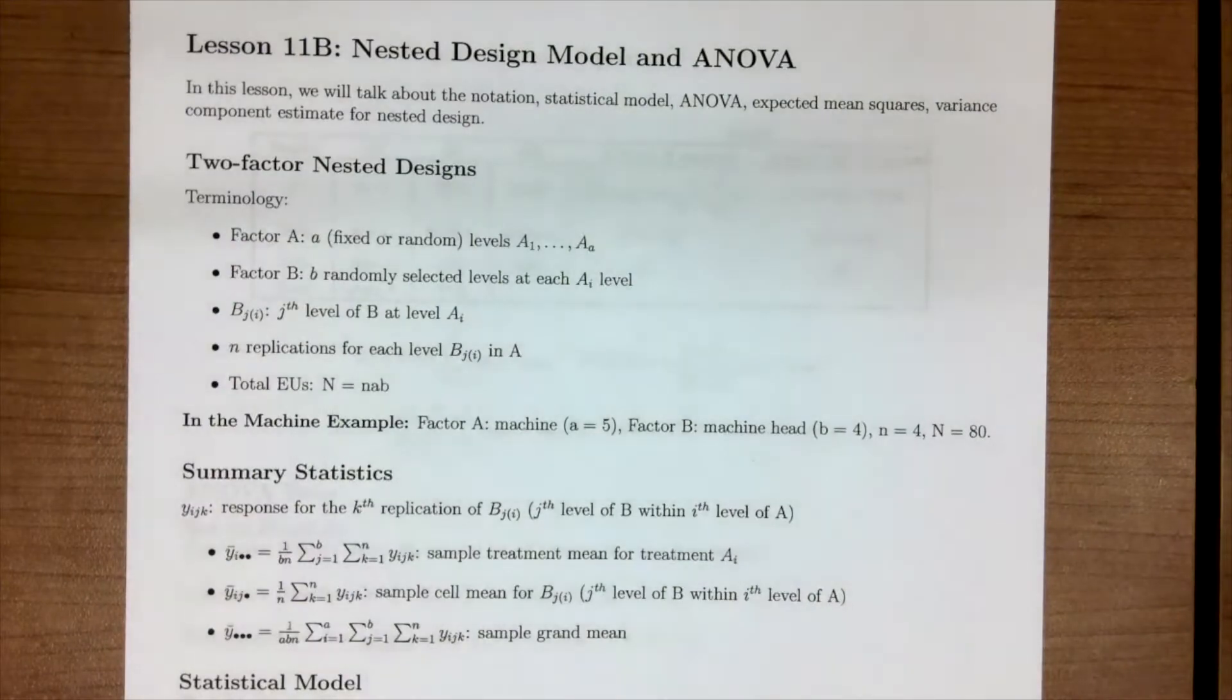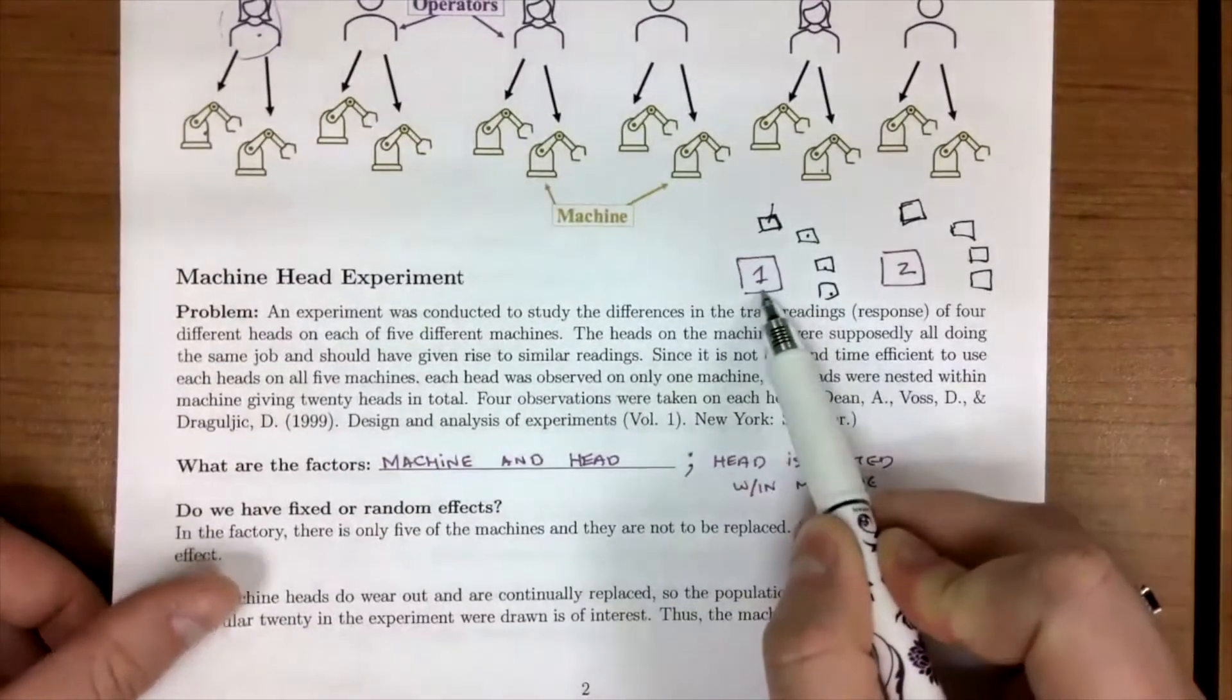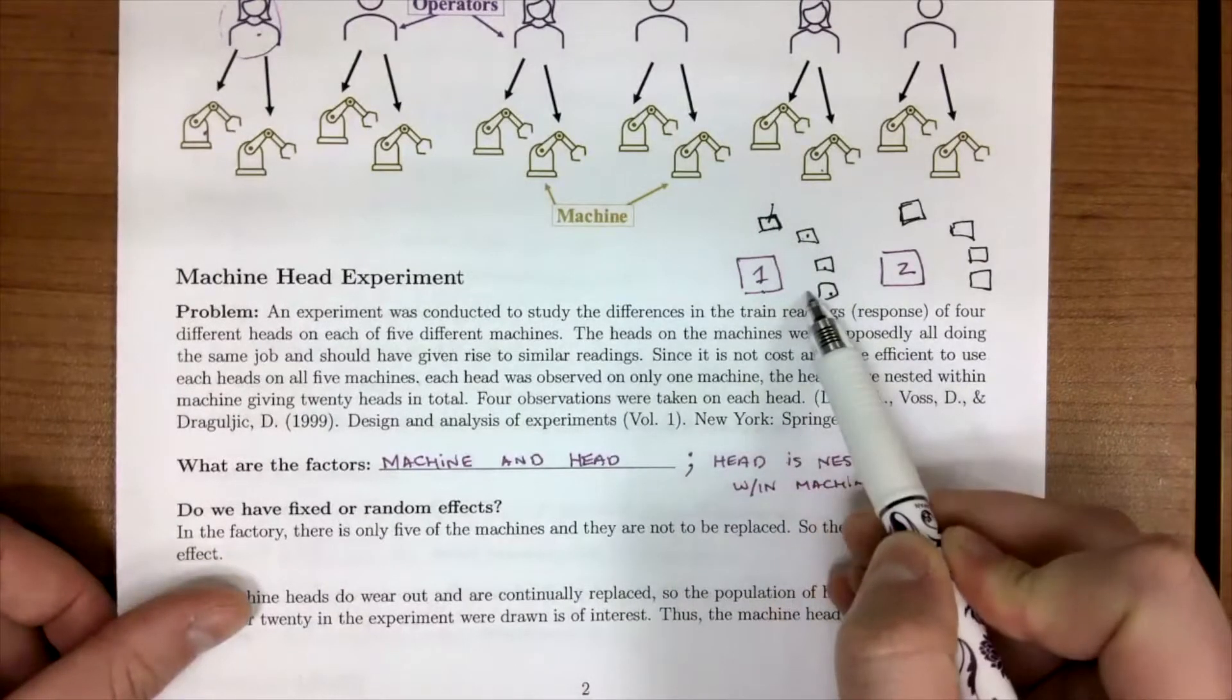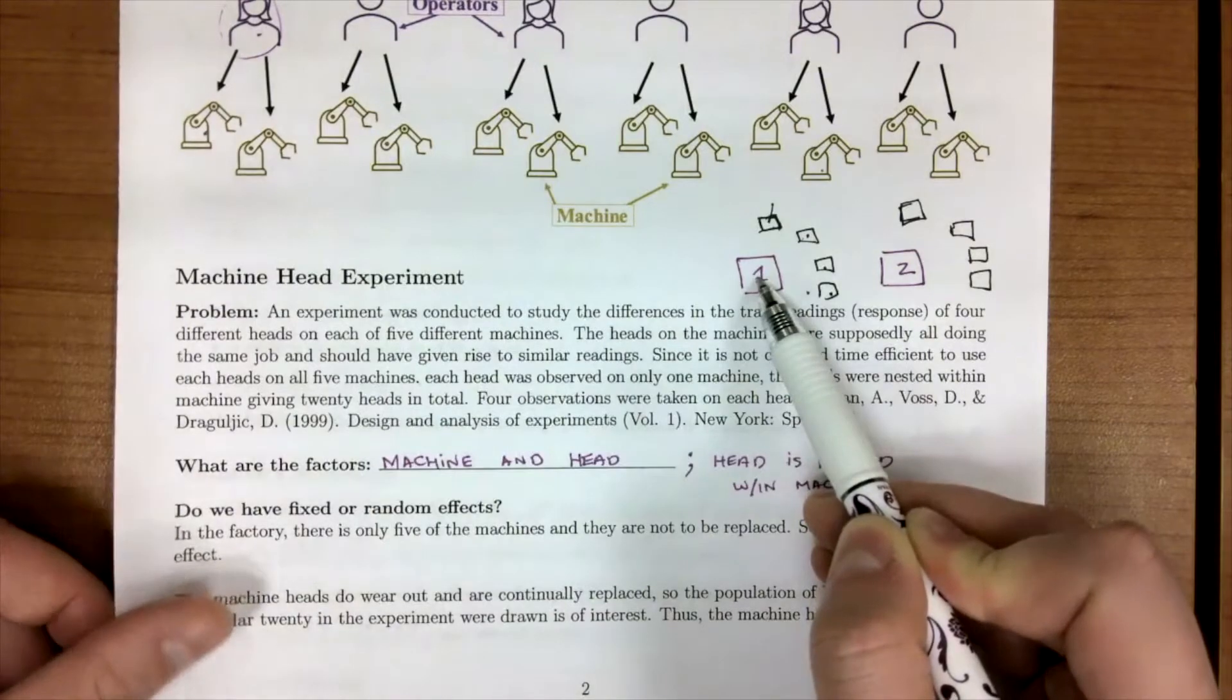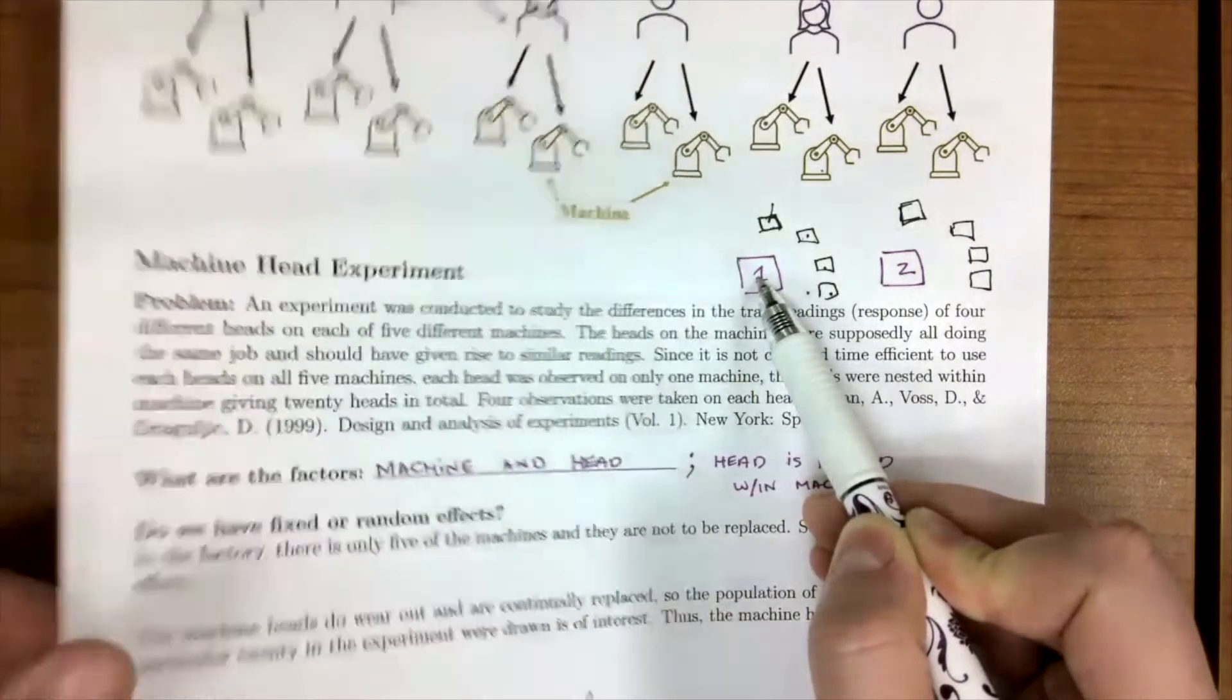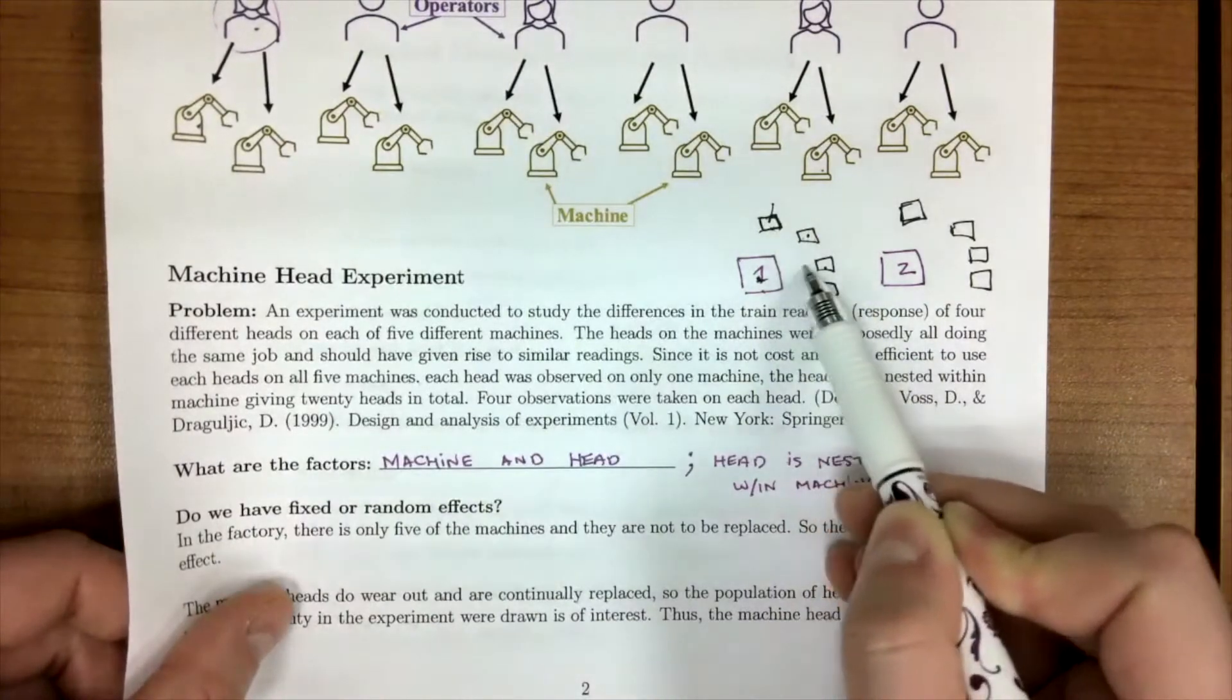In our machine head example, which is right here, we had a machine, and then we had heads. So our machine is our big factor, or what we're going to call factor A. And then we had our heads, which are going to be nested within our machine.